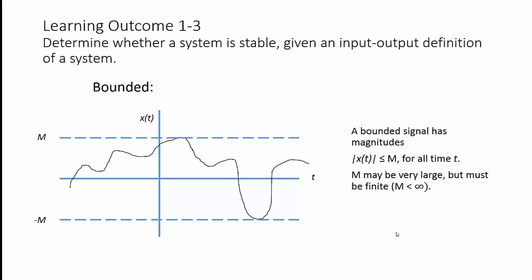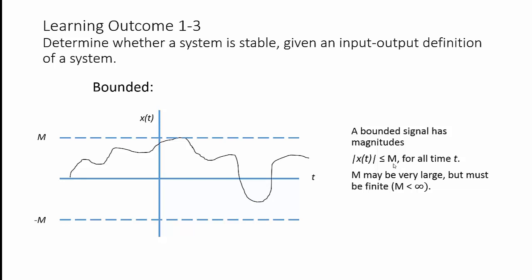Here's a signal x(t), and the biggest value it takes on is m, and the smallest value it takes on is negative m. So its positive value is m and its negative value is negative m. Therefore, the absolute value of x(t) is less than or equal to m for all time t. Here's another signal that is also bounded by m. Notice the top goes up to m, but the bottom does not go all the way to negative m — it still means the absolute value of x(t) is less than or equal to m.